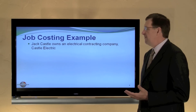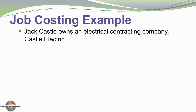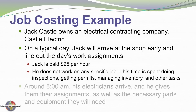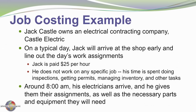A good example of this is an electrician. Jack Castle owns an electrical company called Castle Electric. On a typical day, Jack arrives early at the office and starts lining out the day's work. He's paid $25 an hour, but doesn't do work directly on jobs — he handles inspection, pulling permits, managing inventory, and customer relations. He has a number of electricians who typically arrive around eight o'clock and he gives them their assignments, equipment, and parts for the day.